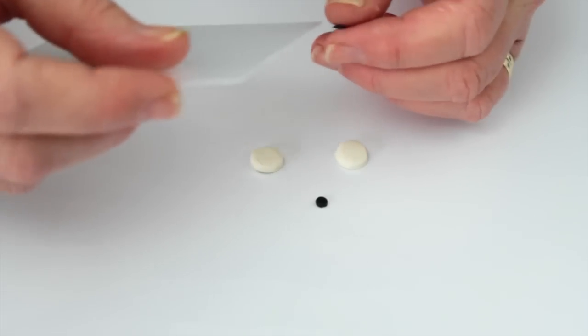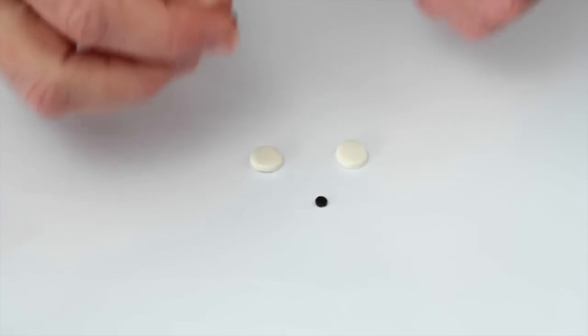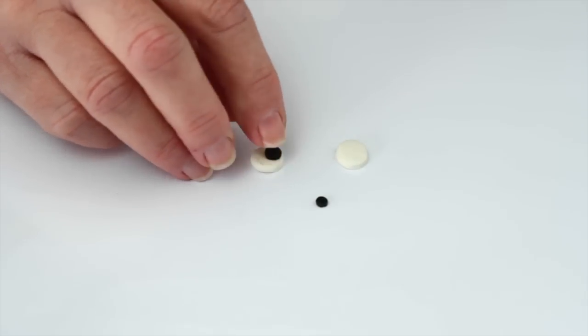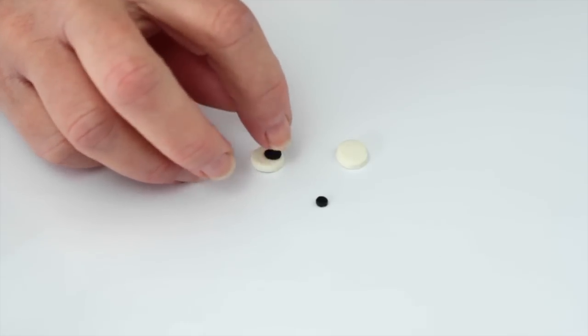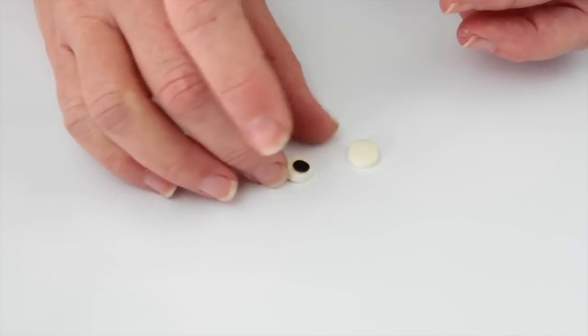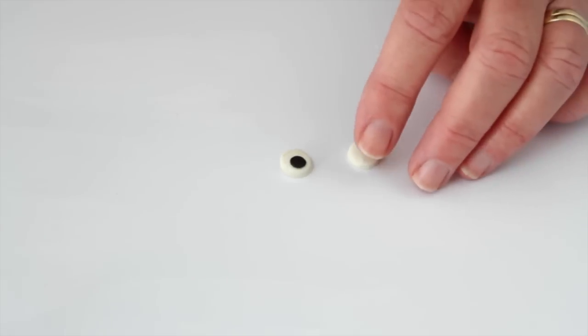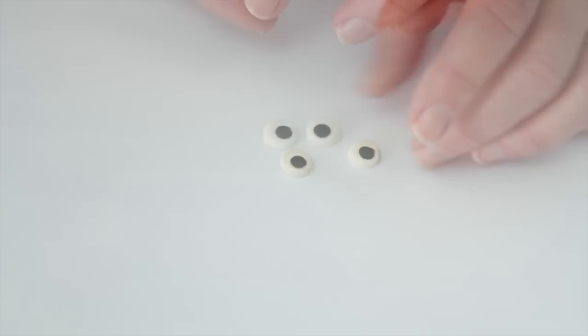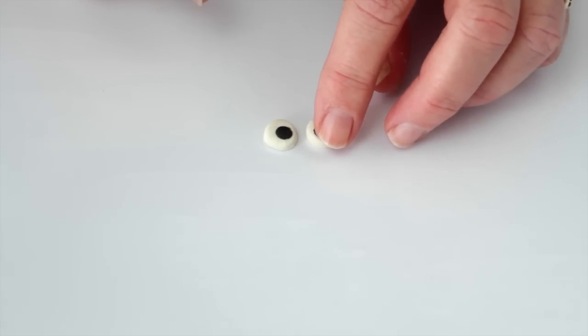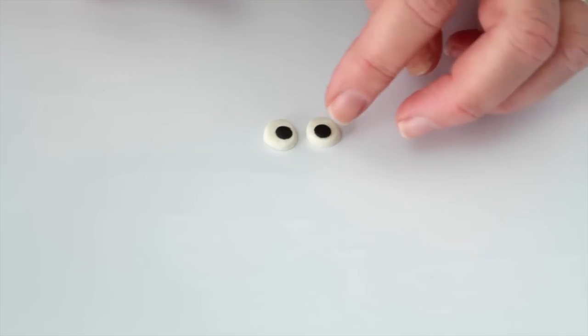Lightly push the black circles onto the white circles. To finish off the eye, take a small amount of play-doh and roll it into a ball. Gently press it onto the black circle.